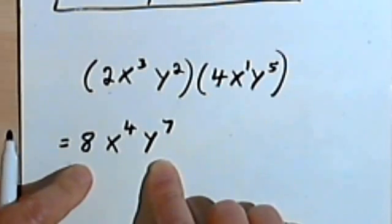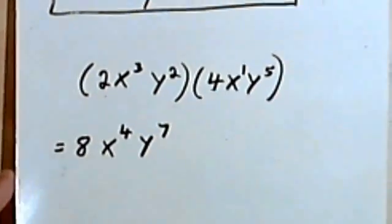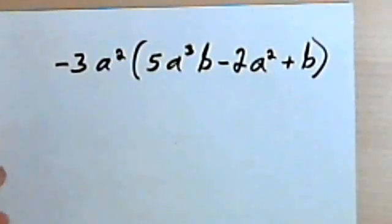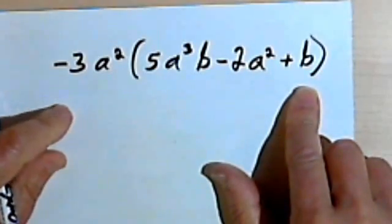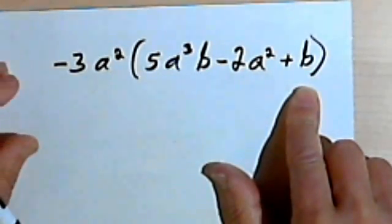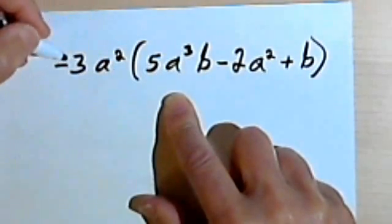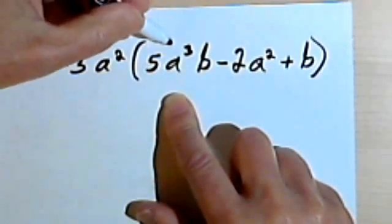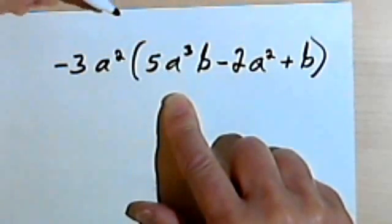And that's all there is to it. The next step up from multiplying a monomial by a monomial would be multiplying a monomial times a polynomial. This is really no harder — it's a bit more work, but all we're going to do is take this monomial, negative 3a squared, and distribute it to each of the terms in the polynomial.